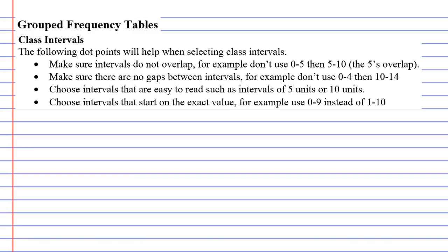Grouped frequency tables - we use what are called class intervals. To help you understand what they are and what these dot points are talking about, we're just going to quickly come up with some really simple numbers such as 0, 2, 10, 14, 8, and 19. Just randomly picked numbers.